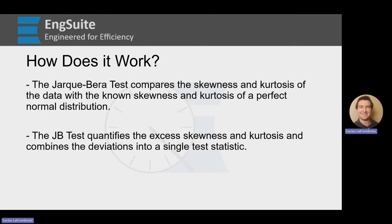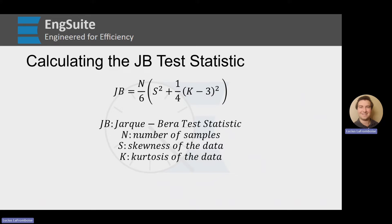So let's learn how those skewness and kurtosis get turned into a test statistic. It follows this relatively simple formula here, where JB equals n over 6 times s squared plus 1 fourth times k minus 3 squared, where JB is our Jarque-Bera test statistic, n is the number of samples, s is the skewness of our data, and k is the kurtosis of our data.